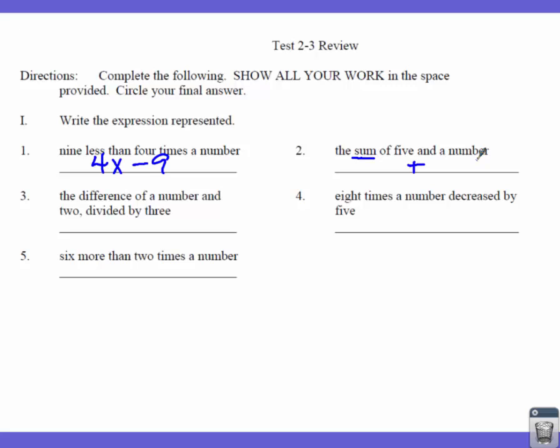Anytime you hear sum, difference, or quotient, we take the things in the order they appear in the problem. So 'the sum of 5 and a number' means the plus sign goes where the 'and' is. The 5 goes first, and a number — which can be X, N, M, whatever you want — goes second.